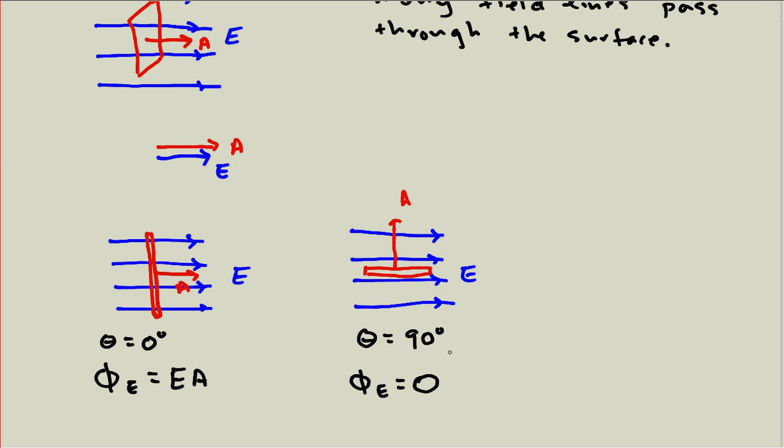And that is consistent with counting how many electric field lines go through the surface. So in this case, I had four electric field lines going through the surface. Here I have none. All of them either go above or below the surface, but none of them actually pass through the rectangle I drew.